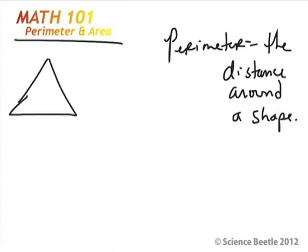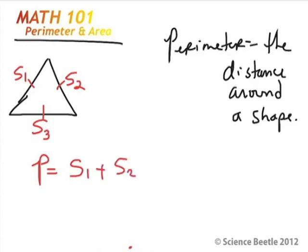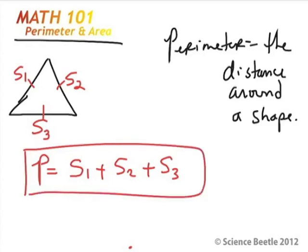Our next structure is going to be a triangle. The triangle poses a little bit of a different circumstance because we don't have four sides — we've got three sides: S1, S2, and S3. We can assume several things; we can assume they're all the same. The perimeter of this triangle would be the length of side 1 plus the length of side 2 plus the length of side 3. And even if the sides were not equal, you would still calculate the perimeter using this same formula.